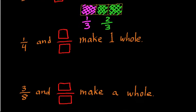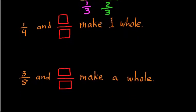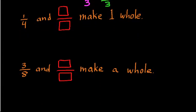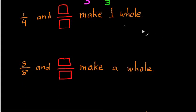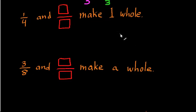OK, let me try another problem with you. Hopefully that made sense. So 1 fourth and blank over blank make one whole. How would we solve this problem? So let's again start and draw a nice shape — let's draw a square.